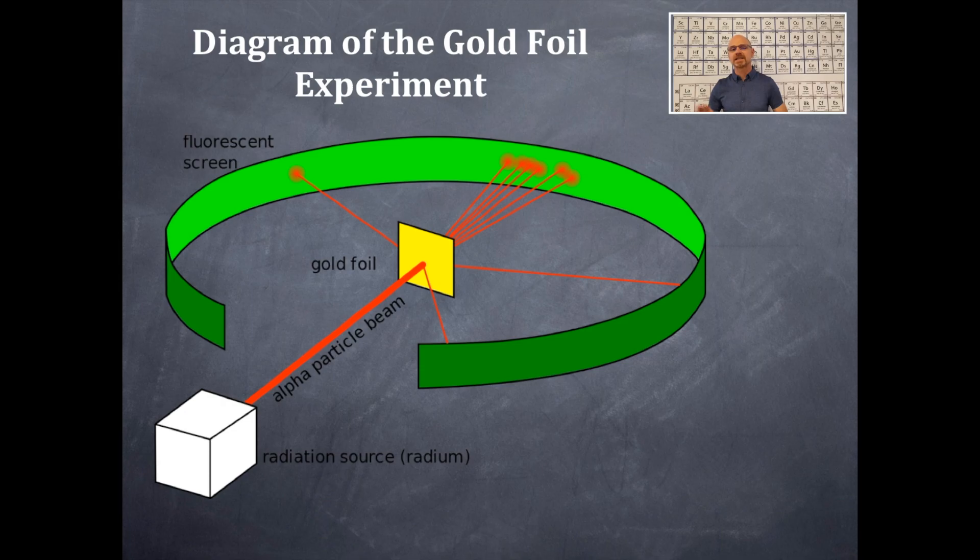Now a few of the particles were deflected either right or left. Those alpha particles were positively charged. A helium nucleus is an alpha particle. So a helium atom with the electrons ripped off, that is an alpha particle.